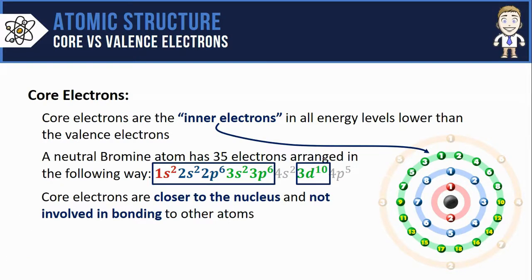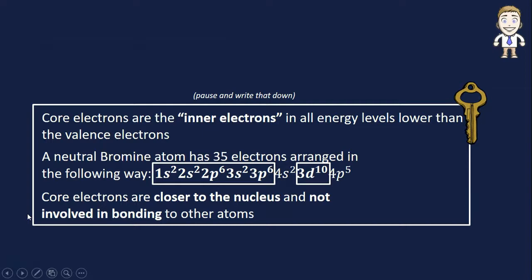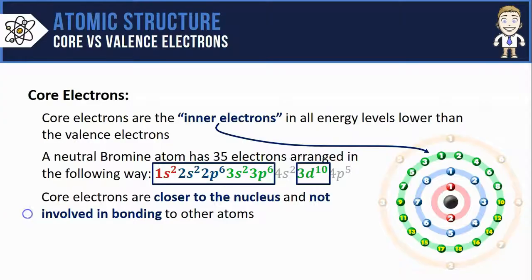What's so special about core electrons? Well, they're closer to the nucleus. That's going to matter for some stuff later on. These are also not involved in bonding to other atoms. These are some important key ideas related to core electrons. Make sure to write them down.